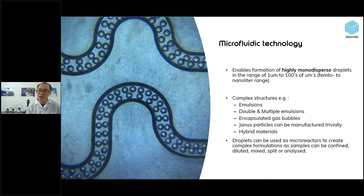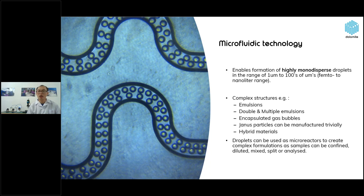With microfluidic technology we can form highly monodisperse droplets in the range of micrometers to 200 micrometers with complex structures — for example, emulsions, double emulsions, multiple emulsions, encapsulated gas bubbles, Janus particles, and hybrid materials. Droplets can also be used as micro-reactors to create complex formulations, where samples can be confined, diluted, mixed, split, or analyzed.